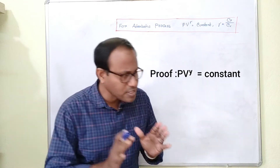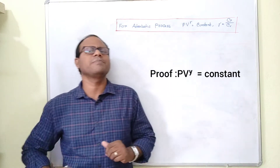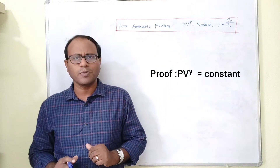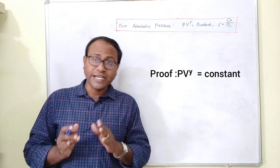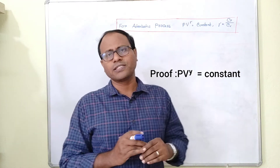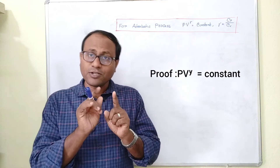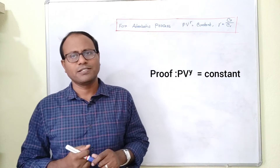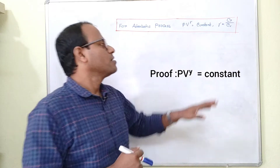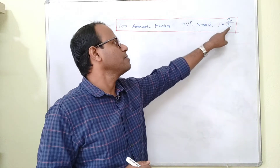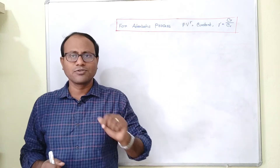For the isothermal process PV is constant, and for the adiabatic process PV to the power of gamma is constant. Gamma is defined as the ratio of molar specific heats: Cp divided by Cv.